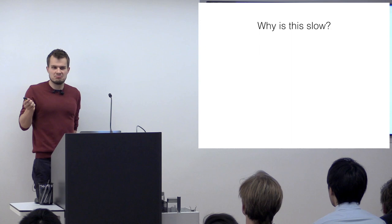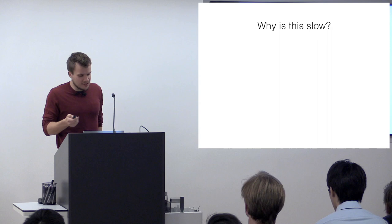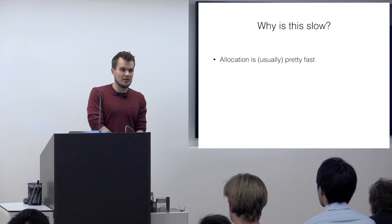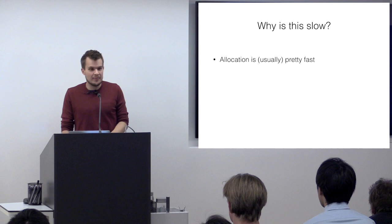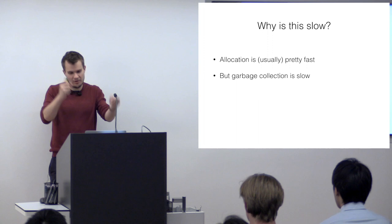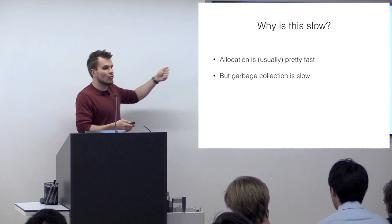You might ask: why is this even a problem? Why is allocation slow? The allocation itself isn't actually slow — in OCaml, in the common case, allocation is just two or three assembly instructions: an increment and a check for overflow. So the allocation isn't the problem; that's fast. The obvious problem is of course that garbage collection is slow. It's the classic trade-off: you don't have to manage memory yourself, but every once in a while you pay a cost where the GC runs and you can't do anything. That's true, but it's not the only problem.